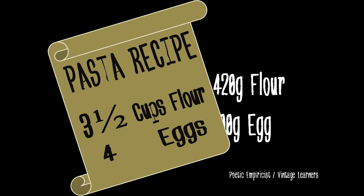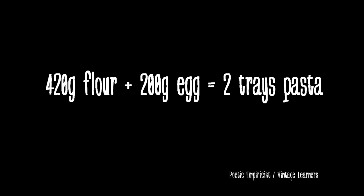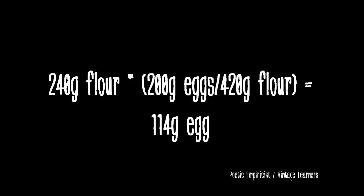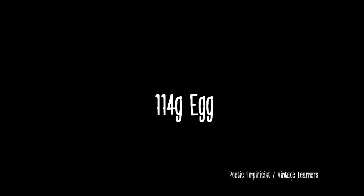Step three: we are going to take our grams of flour and see how many grams of eggs are needed. In order to do this, we need the ratio found in the original recipe. We'll set the ratio up so the flour is on the bottom and cancels out. That is our result for step three — a hundred and fourteen grams of eggs. But that's not entirely helpful.